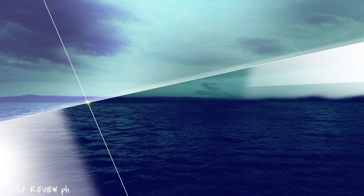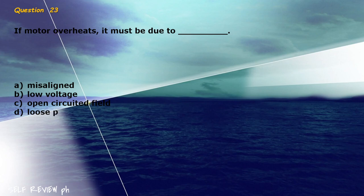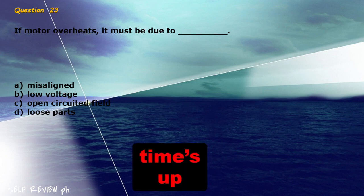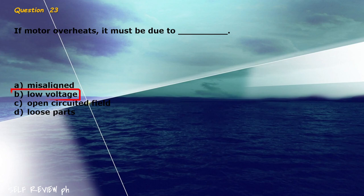Question 23: If a motor overheats, it must be due to blank. A) misaligned, B) low voltage, C) open circuited field, D) loose parts. The correct answer is letter B, low voltage.